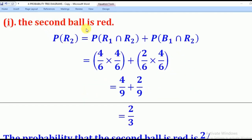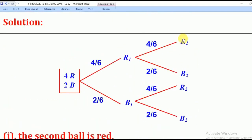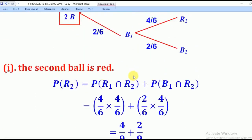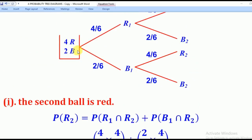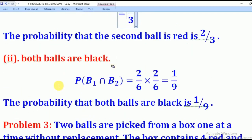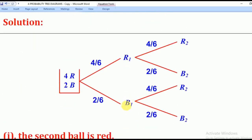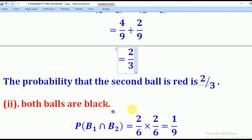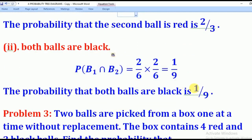In Roman 1, they ask for the probability that the second ball is red. Second ball red can come from path red-then-red: four over six times four over six, giving four over nine. Or from path black-then-red: two over six times four over six, giving two over nine. Summing the two gives two over three — that is the probability the second ball is red. For Roman 2, both balls black: two over six times two over six equals one over nine — that is the answer.